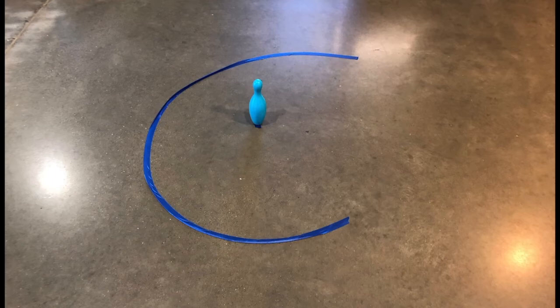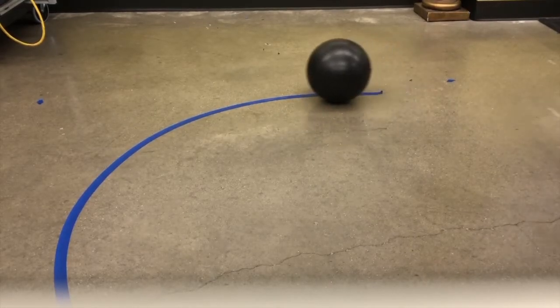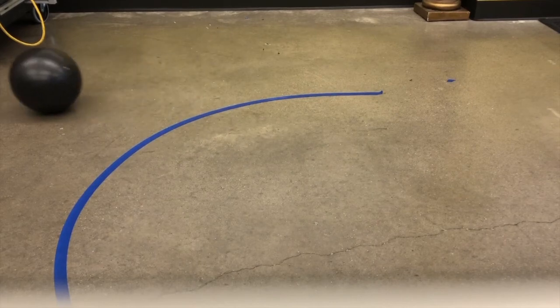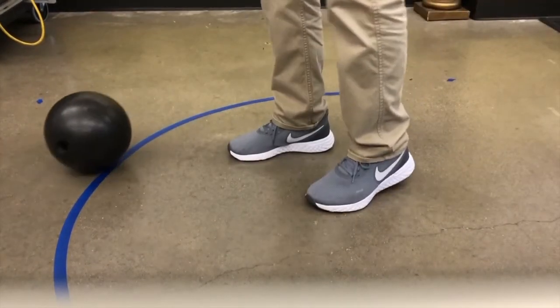Suppose I want the ball to follow this curved path around the pin. If I get the ball started on this path, it does not stay on the path for very long. I need to constantly hit the ball to change the direction and keep it on the path.